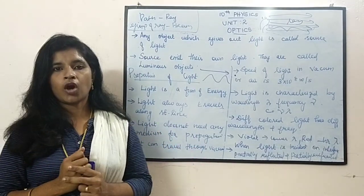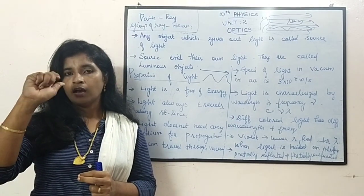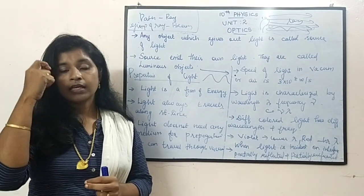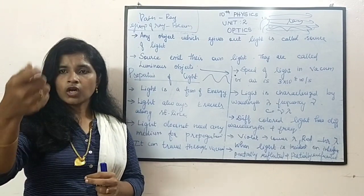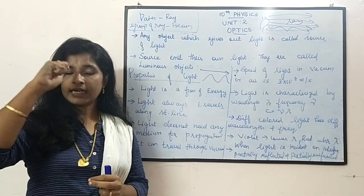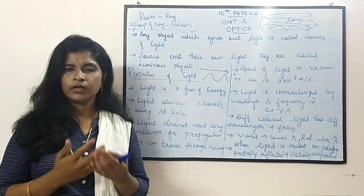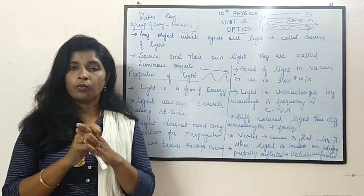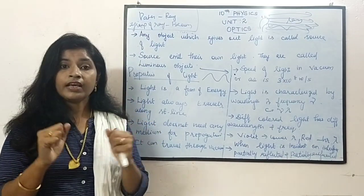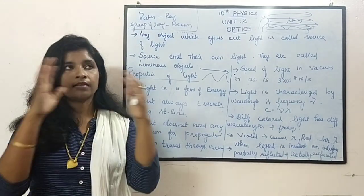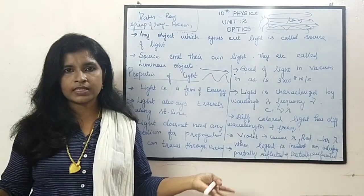Now, if you are using a torch light, you are lighting it — that is you are shining it in your eyes, because you are seeing with your eyes. Can you be able to see the object? Definitely no. We can see objects in the daytime, we can see all the objects around us.